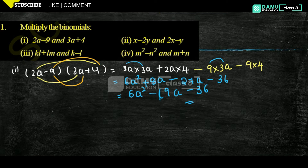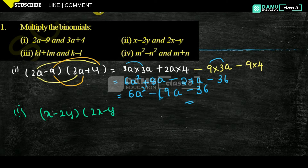So this is the value. Our next one, the second one, is: (x - 2y) into (2x - y).